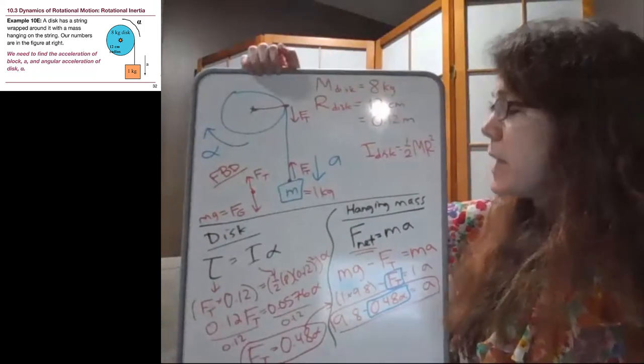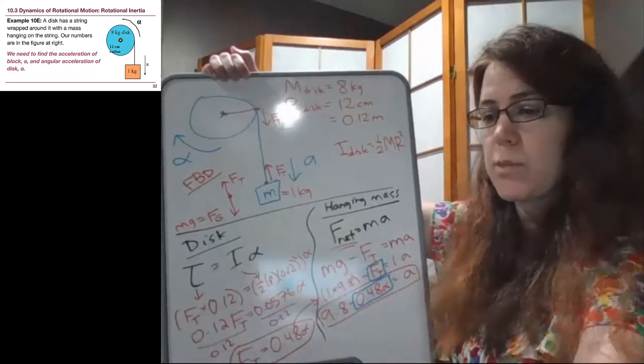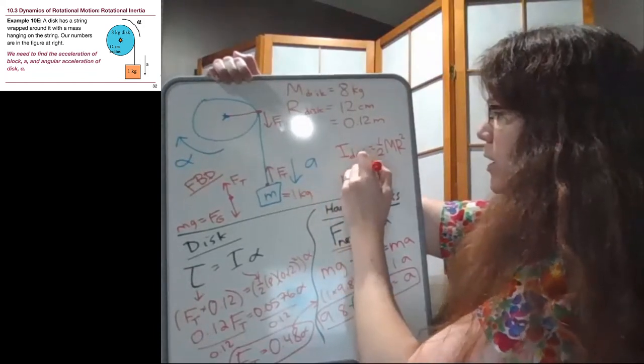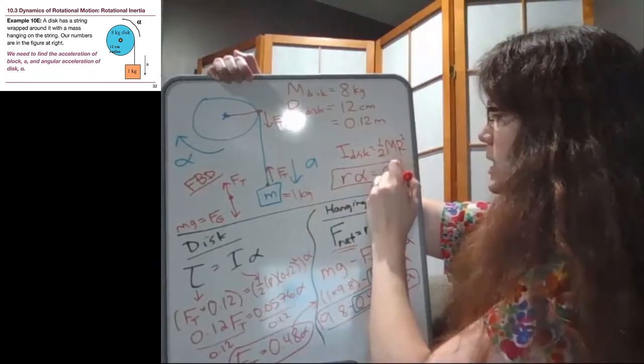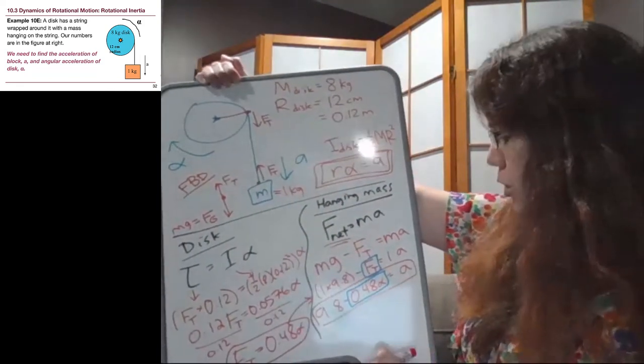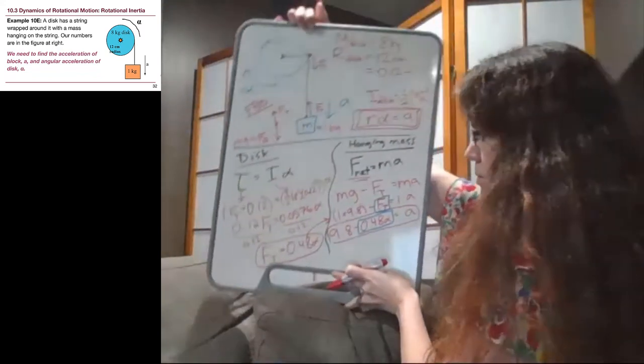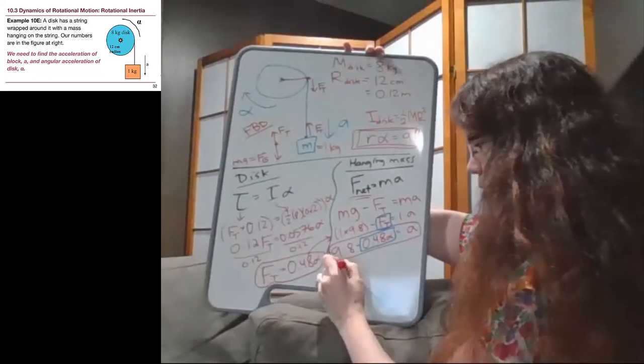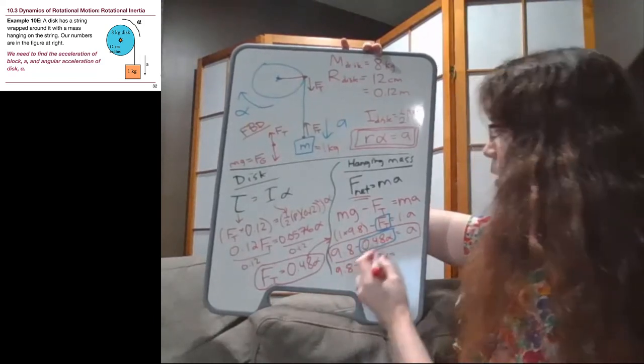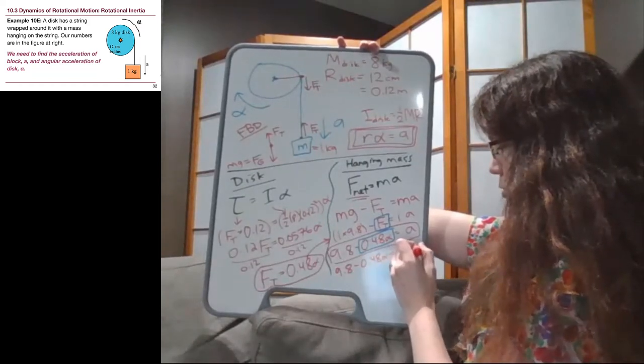And so the last piece that we need to bring in, it's kind of like a jigsaw puzzle, there's a lot of separate pieces, but the big picture comes together when we recognize those pieces. We have that R alpha equals A. That is a key idea from the first part of this chapter. So instead of A, we can write R alpha. So at the bottom of the board here, we have 9.8 minus 0.48 alpha. And then R alpha instead of A will be 0.12 alpha.